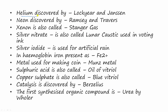Helium was discovered by Lockyer together with Janssen. Neon was discovered by Ramsay and Travers. Xenon is also called stranger gas. Silver nitrate is also called lunar caustic and it is used in voting ink. Silver iodide is used for artificial rains.